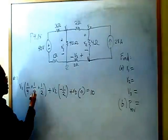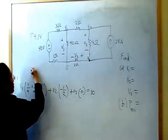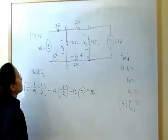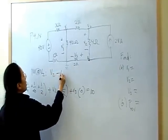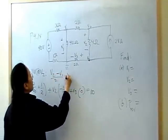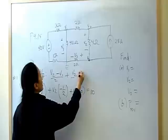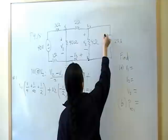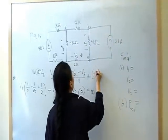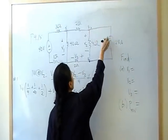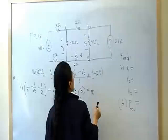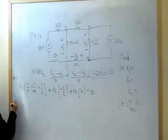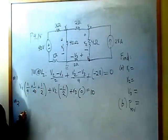I need two more equations, and they're going to come from nodes two and three. So node voltage at V2 gives me V2 minus V1 over two plus V2 minus V3 over four plus this one right here plus negative 28 because this current is defined as going into the node, which makes it negative 28. Those are all going to be zero.